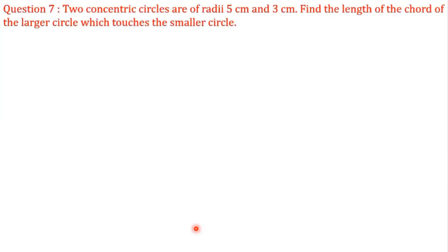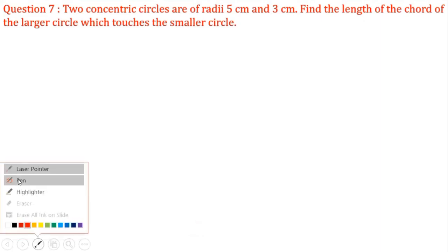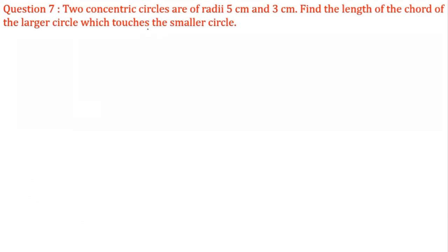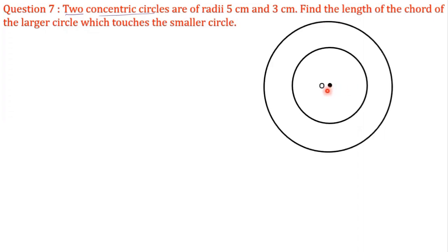We have to draw two concentric circles. Circles having the same center but different radii are called concentric circles. Now we have to draw two circles with the same center but different radii. These are the two circles having the same center O, but different radii — the bigger circle has radius 5 cm and the smaller circle has radius 3 cm.